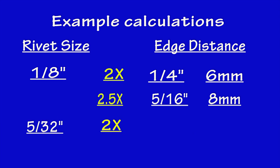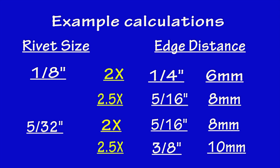If our rivet size is 5/32nds, what is the minimum edge distance we can use? If we use the two times diameter, that would be five-sixteenths of an inch as measured from the center of the rivet to the edge. If we use the metric system, this would translate to very close to eight millimeters. If we want to use the two and a half times the diameter, then the edge distance should be very close to three-eighths or 10 millimeters.